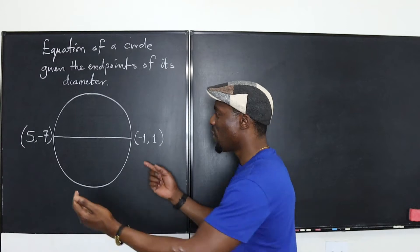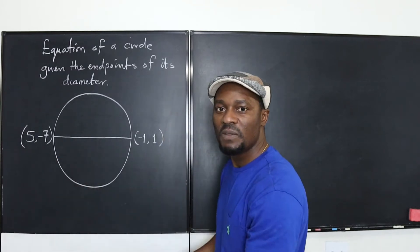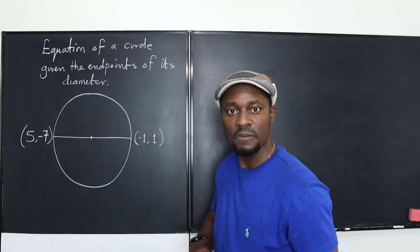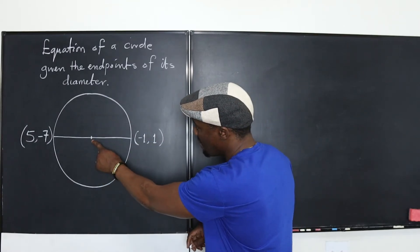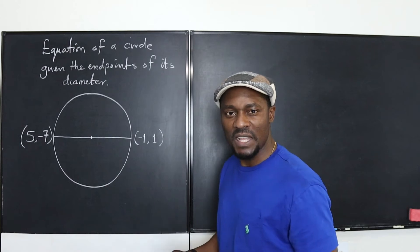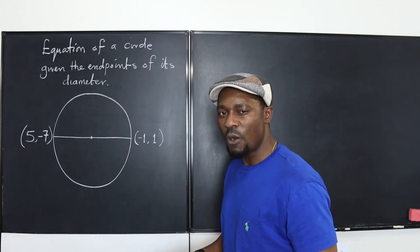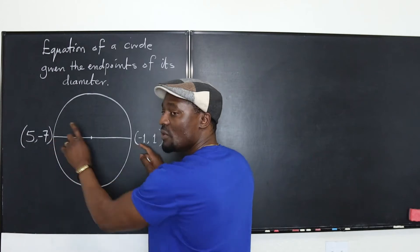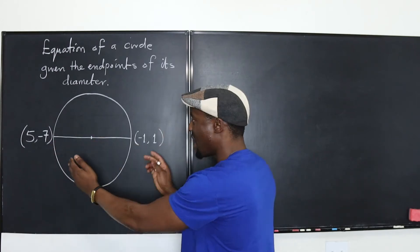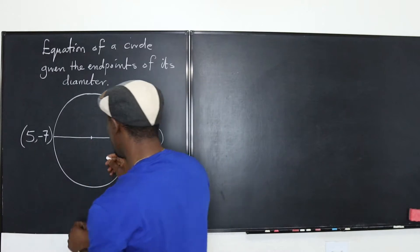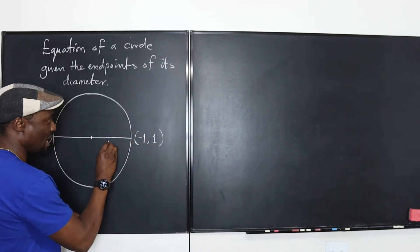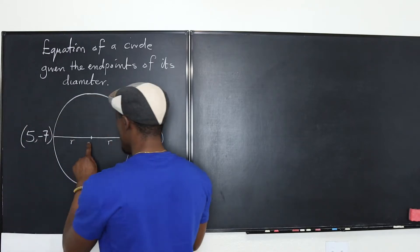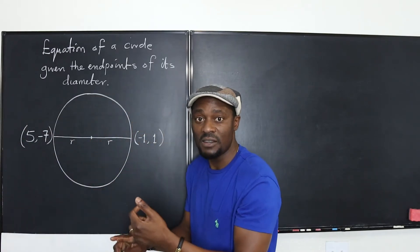So the first thing you want to look at is, what do I have? I have the endpoints of the diameter because it goes through the center of the circle. So the center is right about there. We just need to know what the coordinates of the center will be. And how do you know the center if you know the ends of the diameter? Remember that the center is going to be halfway between these two points. So it means from here to here is going to be a radius. This is going to be a radius. So all you need to know is just know what this point is.